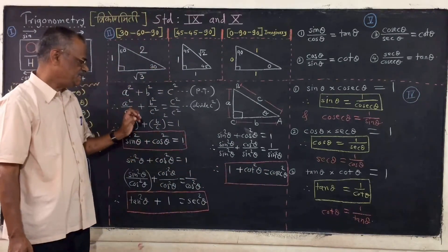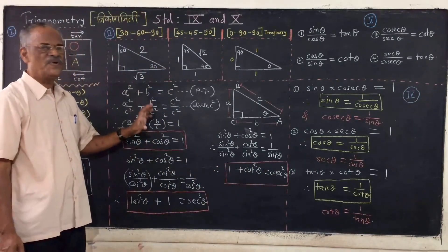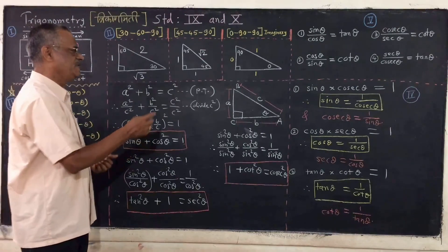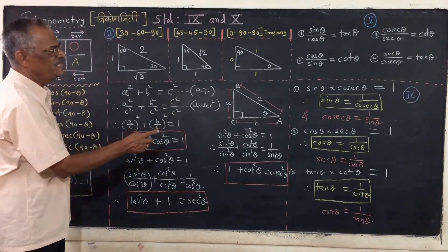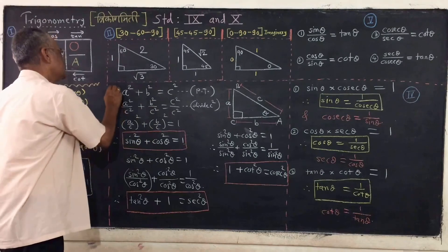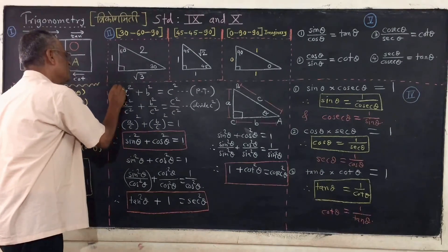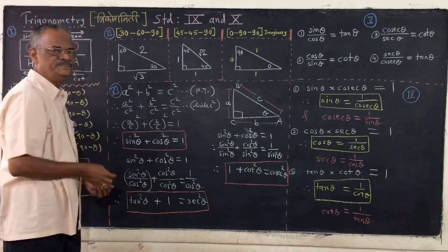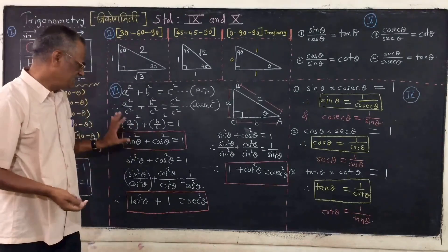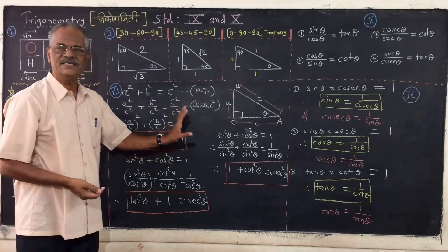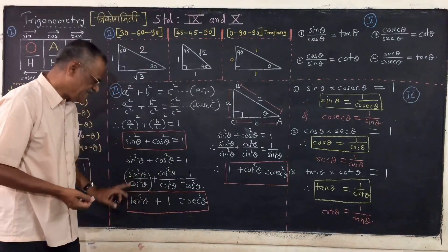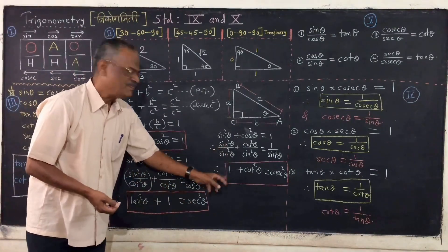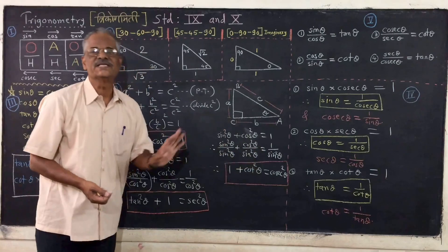This is an important group of identities. Remember these three: sine squared theta plus cos squared theta is equal to 1; 1 plus tan squared theta is equal to sec squared theta; and 1 plus cot squared theta is equal to cosec squared theta.